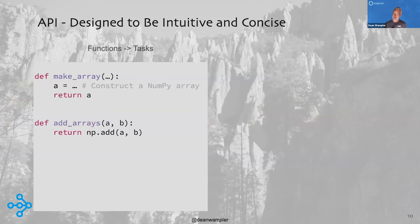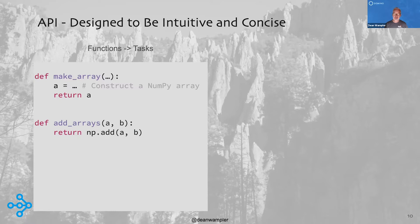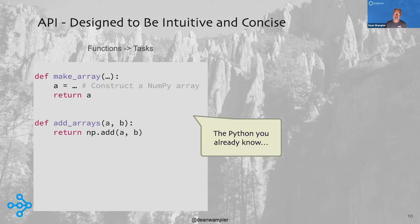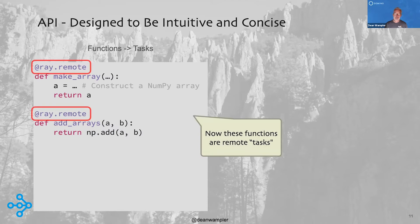Let's actually see how it works. You'll be amazed at how little of an API there actually is, but how concise and powerful it is. One of the things they did right is start with concepts we already know from Python — and really any language. I've got a couple of Python functions: one is going to return a NumPy array, and another method that adds two of them together. If I want to turn this into a distributed task — that's the Ray terminology — I just have to add the decorator at ray.remote, and now I'll be able to run these things as distributed tasks.